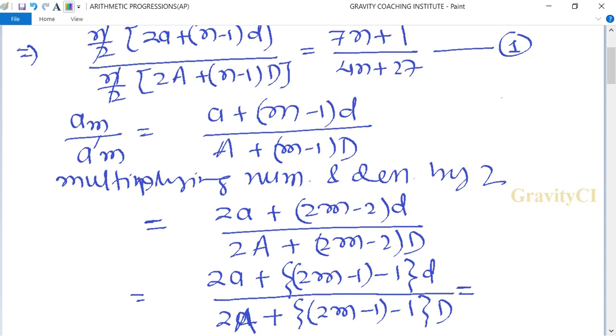Now comparing this part with equation first, we get [7(2m-1)+1] upon [4(2m-1)+27].